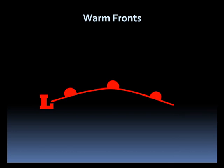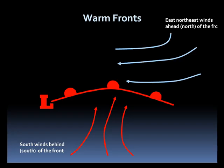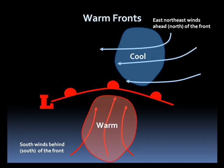On a weather map, warm fronts are represented by a red line with semi-circles on them, called cusps, pointed in the direction the front is moving. South winds are located behind the front, moving it along, while easterly winds are located ahead of it. It's a warm southerly wind with a cooler easterly flow ahead of it.